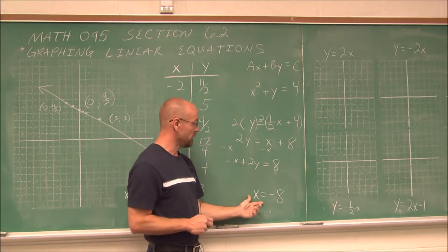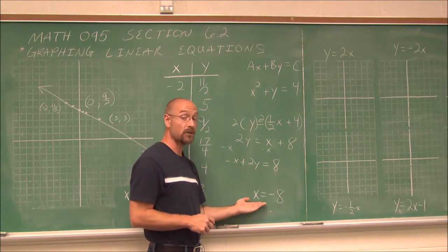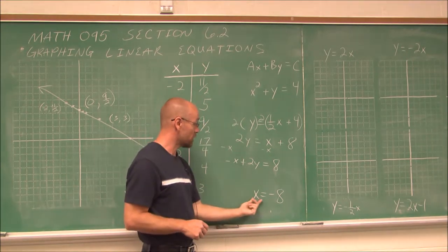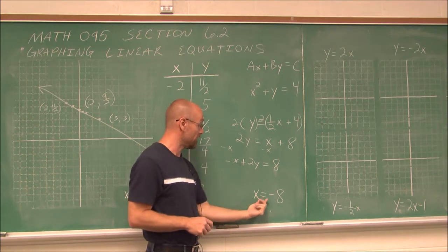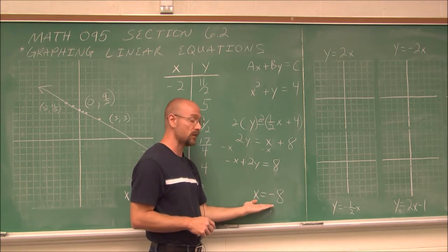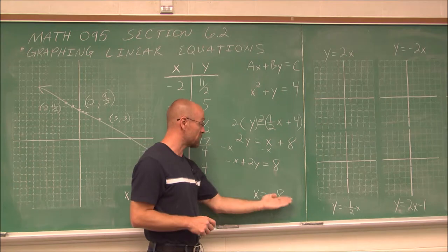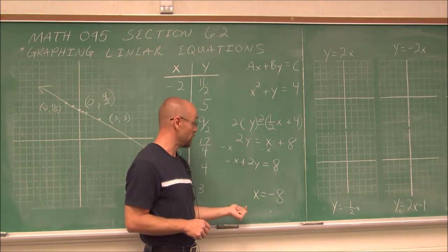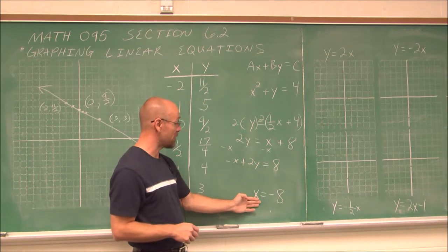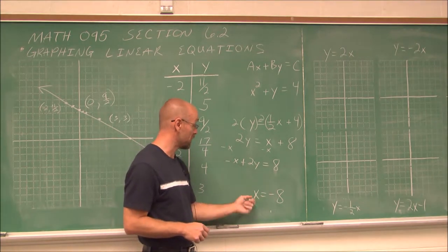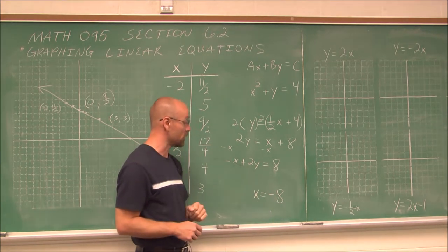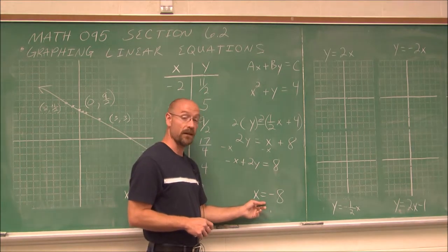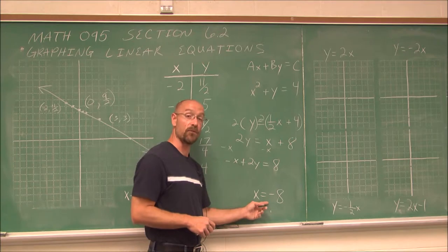We can now see it is in standard form ax plus by equals c, where my a value is negative 1, b is 2, and the constant is 8. If we look at x equals negative 8 — is it a linear equation? Actually it is, but it cannot be written in standard form because there's only one variable. This is actually the standard form for a line we define as a vertical line.